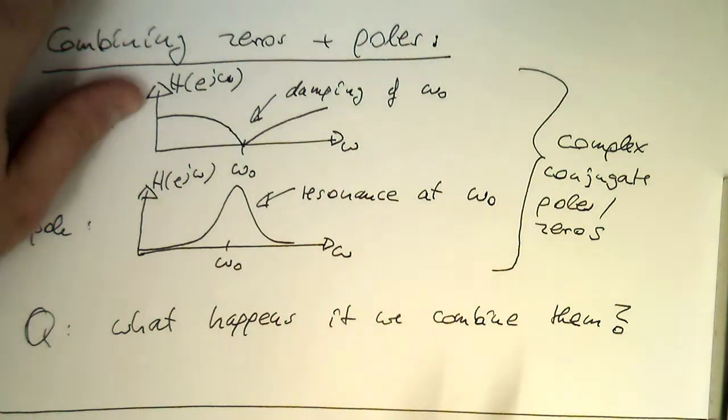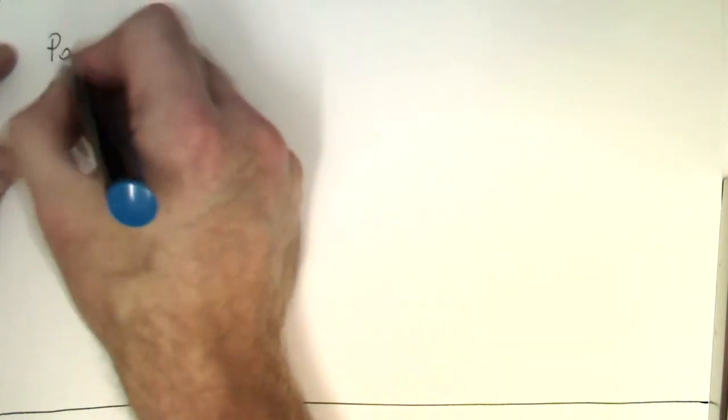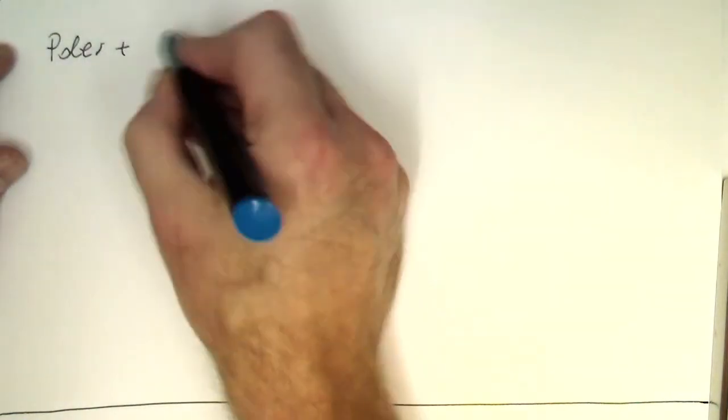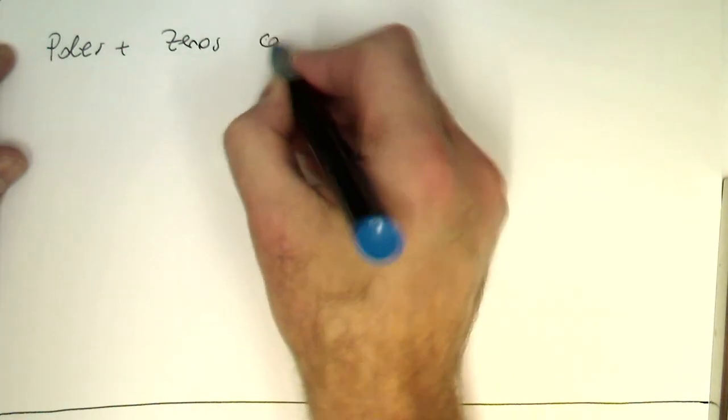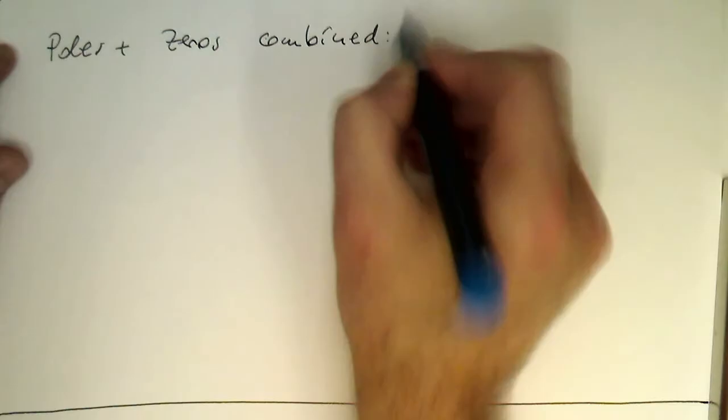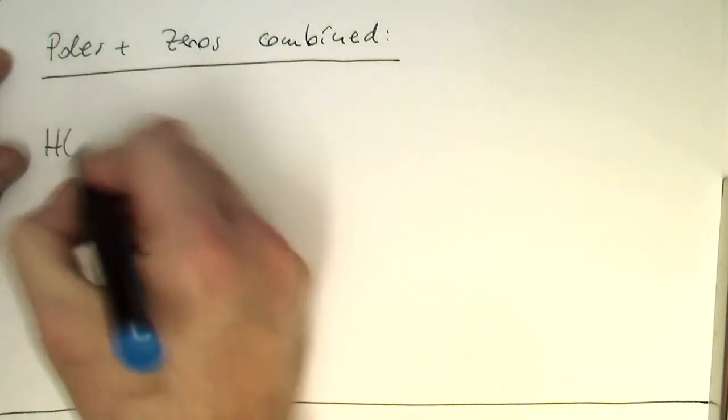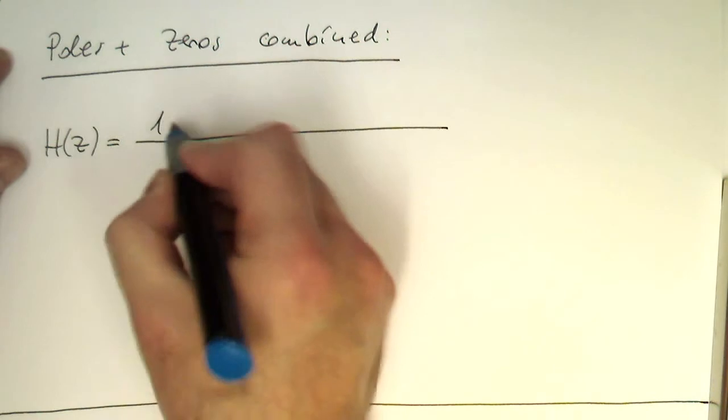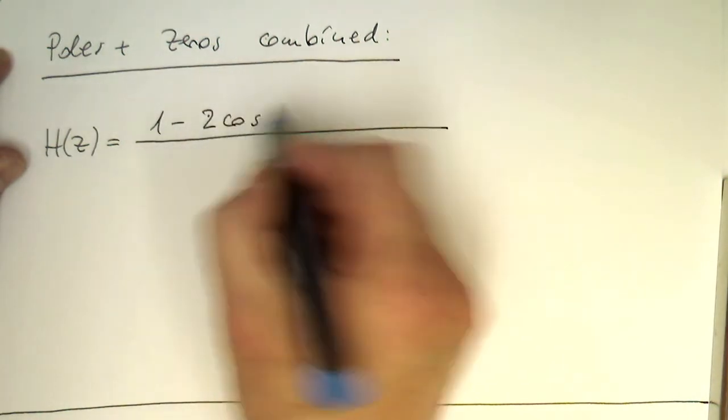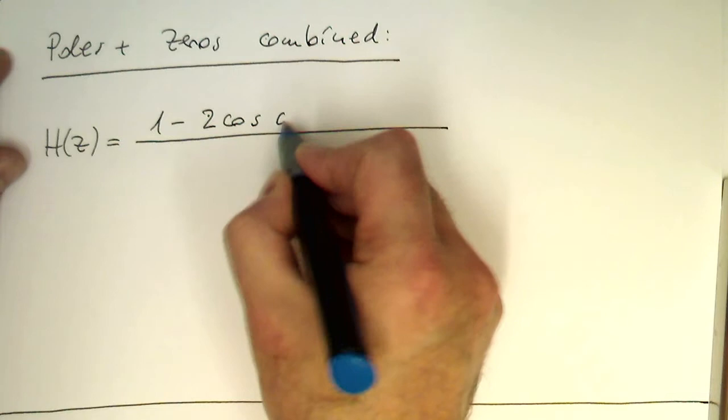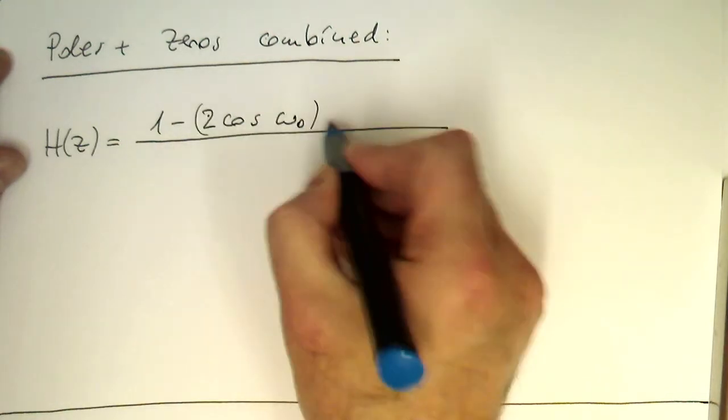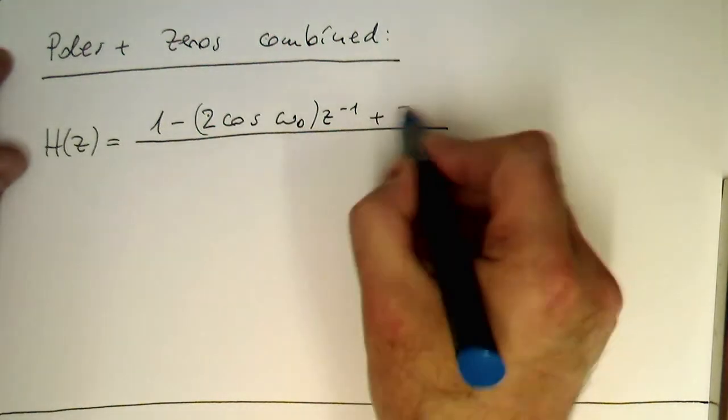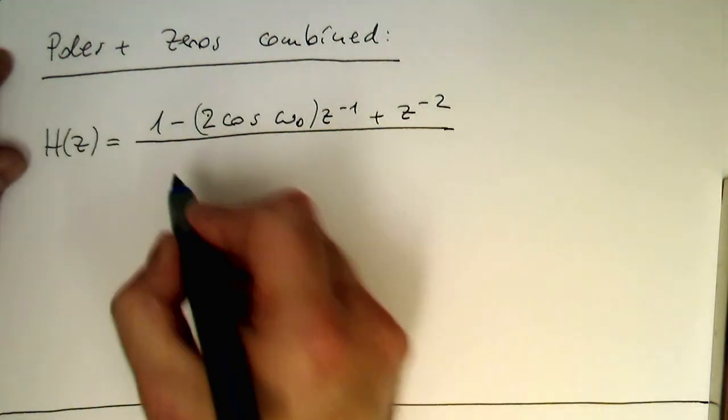So let's write down the full transfer function. So poles and zeros combined. And this gives us the following transfer function. So one minus two cosine omega zero z to minus one plus z to minus two because we've got no r here.